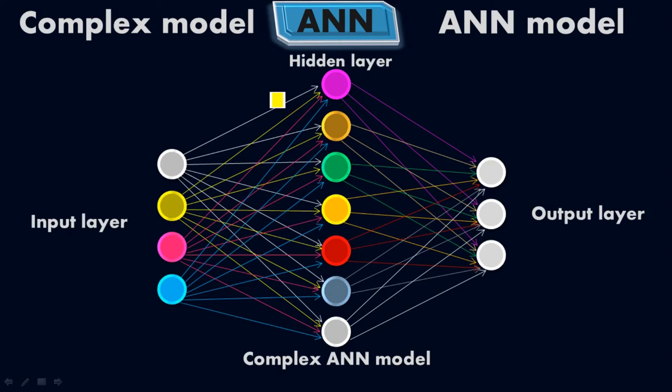We may have even more complex models with multiple inputs and multiple hidden layers — five, six, or even ten hidden layers — depending on what kind of neural network structure you want. Similarly, we may have multiple outputs like five, ten, fifteen, or twenty. So that was a small demo for the artificial neural network — we saw the definition and different ANN models with different inputs, hidden layers, and output layers. I hope it is clear now.